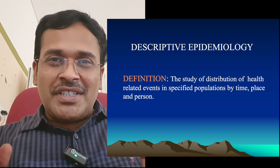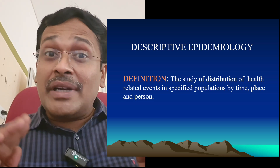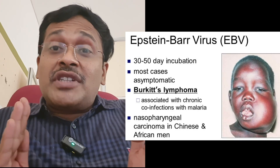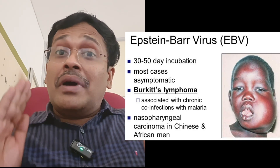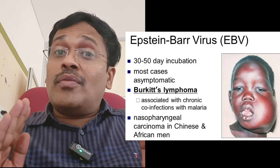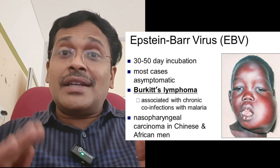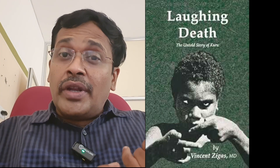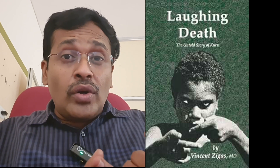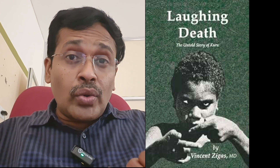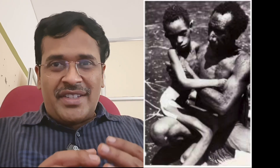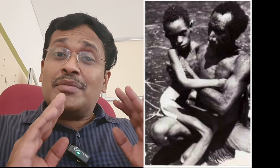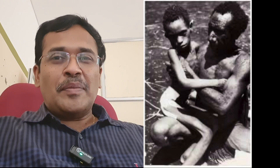Descriptive epidemiology is nothing but observation. Just by observation alone, man was able to find out that Burkitt's lymphoma, a type of cancer, is caused by a virus called Epstein-Barr virus. In New Guinea, a slow neurological disorder called Kuru is caused by a slow virus infection, which was also found by just observational descriptive studies.